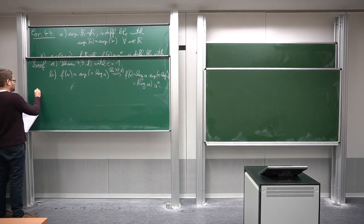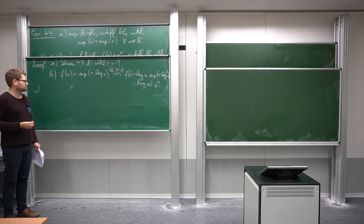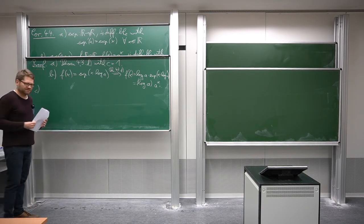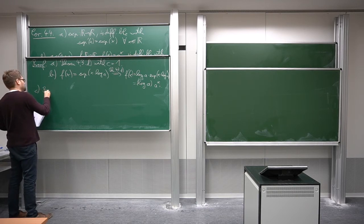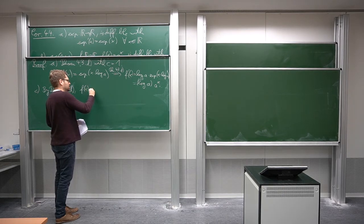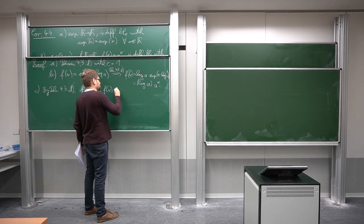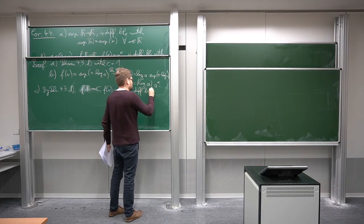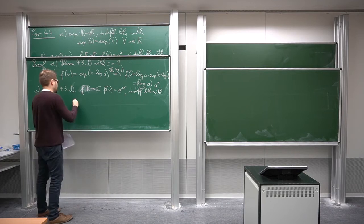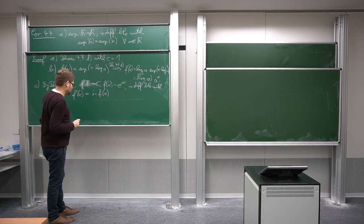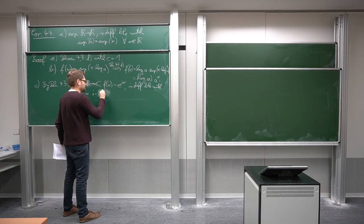Now for sine and cosine: we know that they are real and imaginary parts of the function e to the ix, and this one we can also compute, because we've computed the derivative of e to the power of c times x for some complex number c. By theorem 4.3d once again, the function f from R to C defined by f of x equal to e to the ix is differentiable, with f prime of x equal to i times f of x, i.e., i times e to the ix.